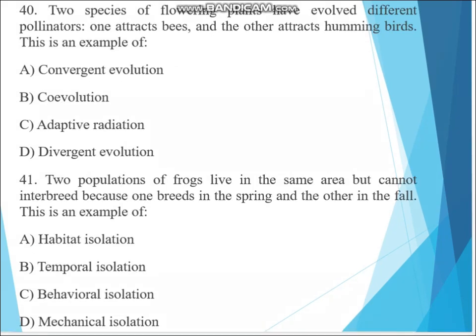Question 40. Two species of flowering plants have evolved different pollinators. One attracts bees and the other attracts hummingbirds. This is an example of A. Convergent evolution, B. Co-evolution, C. Adaptive radiation, D. Divergent evolution. The answer is B, co-evolution, because pollinator and flower species evolve in response to each other.